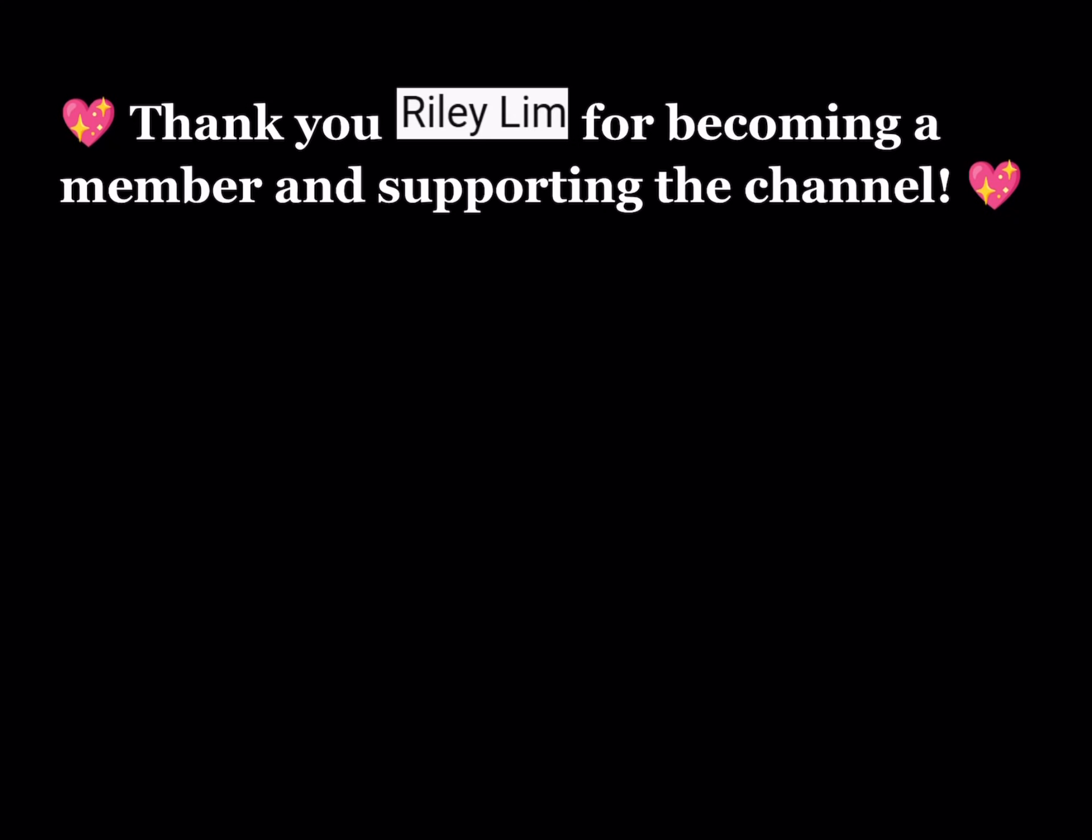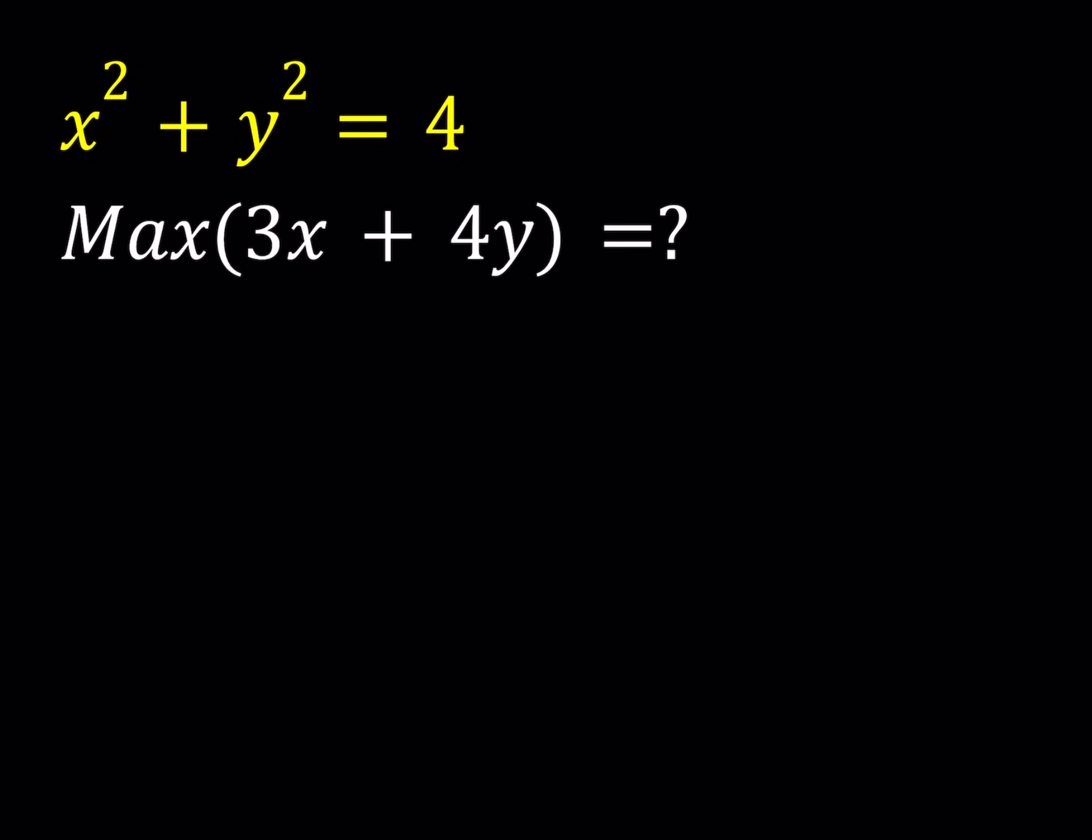So let's get started. We have x² plus y² equals 4 and we are supposed to maximize the expression 3x plus 4y. So we're going to be using an interesting identity to maximize this expression. We could also use derivatives here, but we're going to be using a different approach. So here's what I'd like to introduce. We have the following identity: